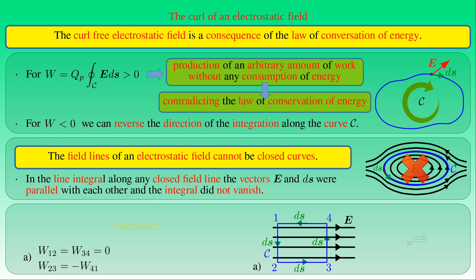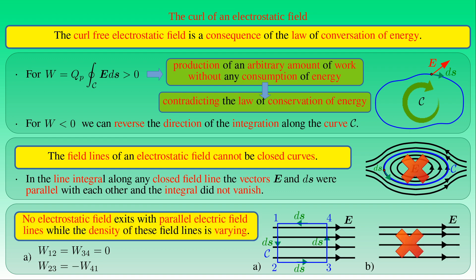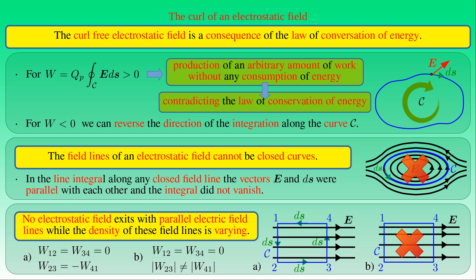Therefore, no electrostatic field exists with parallel electric field lines where the density of those field lines varies. While the work along sides 1-2 and 3-4 would still vanish in a non-uniform field with parallel field lines, the integrals along sides 2-3 and 4-1 would not cancel — the magnitude of E along side 1-4 would differ from that along side 2-3, so the net work along opposite sides would not vanish. Therefore, a non-uniform electrostatic field with parallel field lines cannot exist.